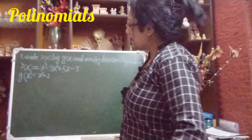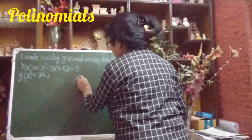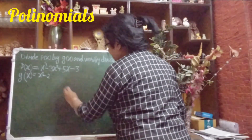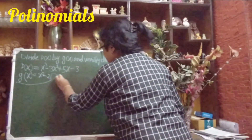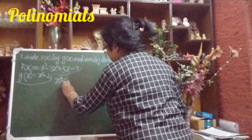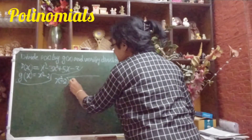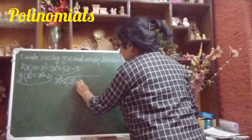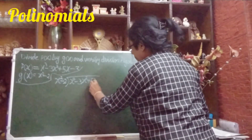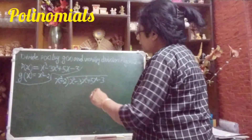Let me write the sum. We have x² − 2 as our divisor, and our dividend p(x) is x³ − 3x² + 5x − 3. Let us start the long division.